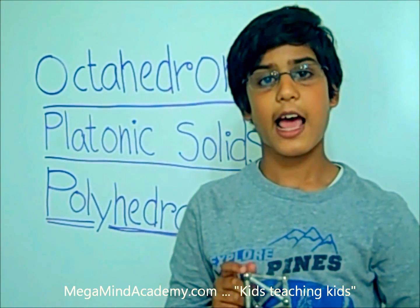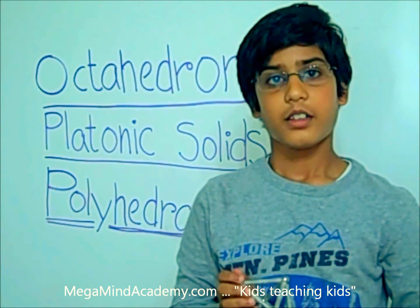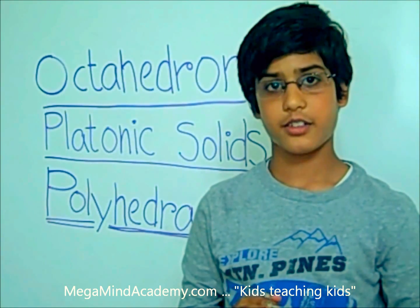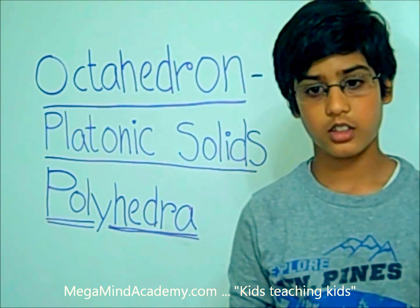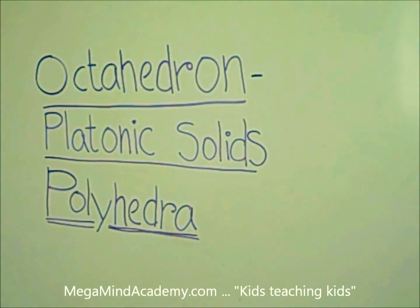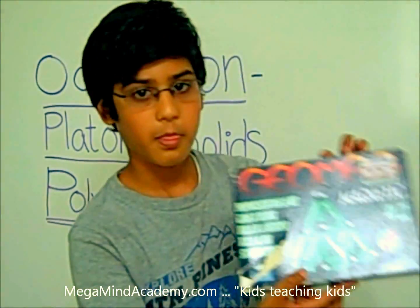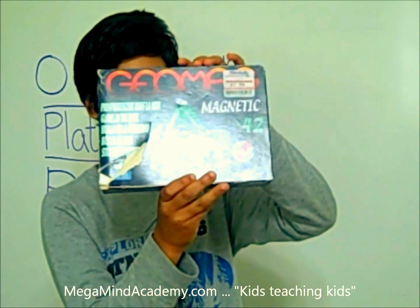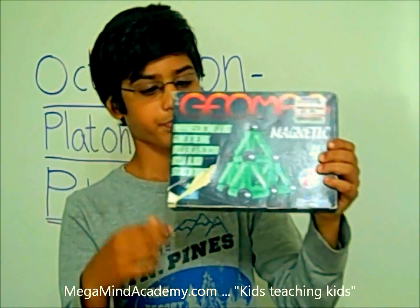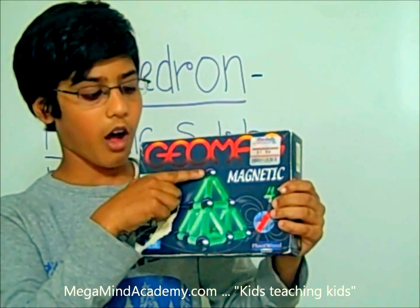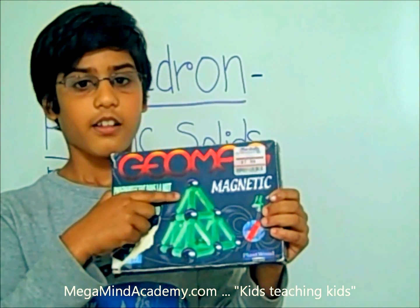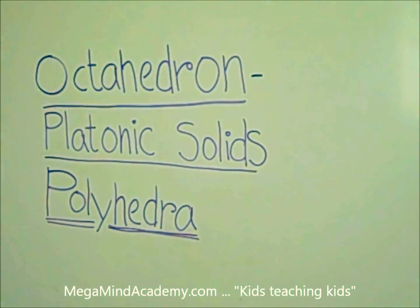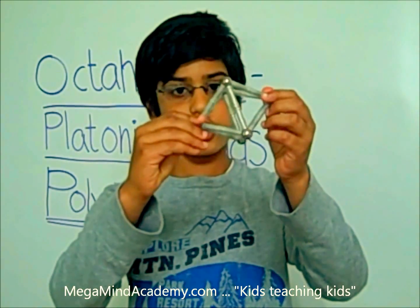Now let's learn about how to build an octahedron. I'm going to use geomagnets to build this. I'm going to use the balls as vertices and the sticks as edges. So let's assemble this octahedron.